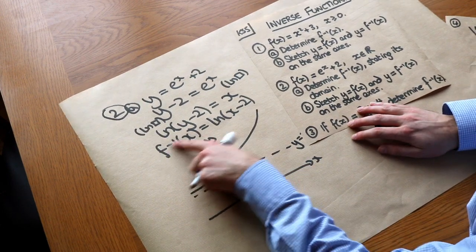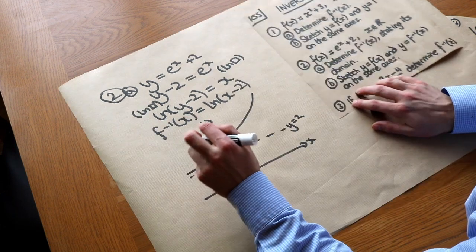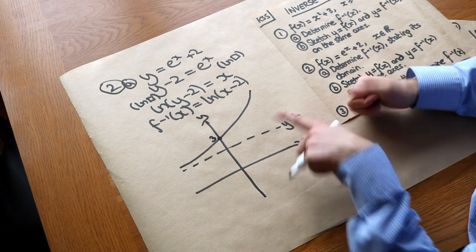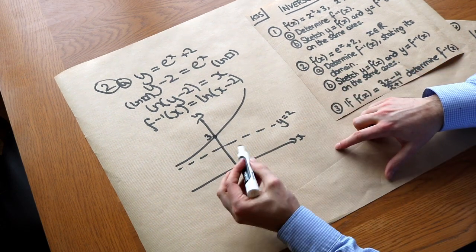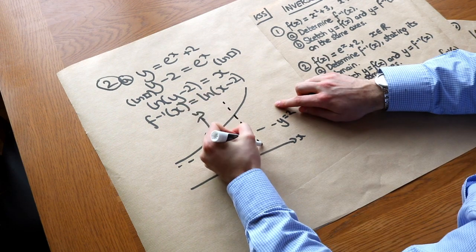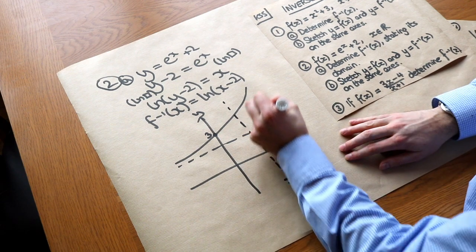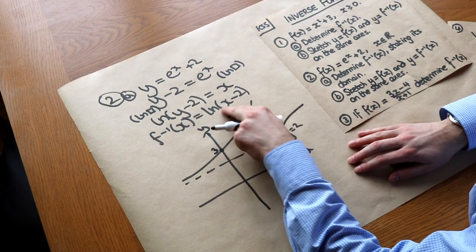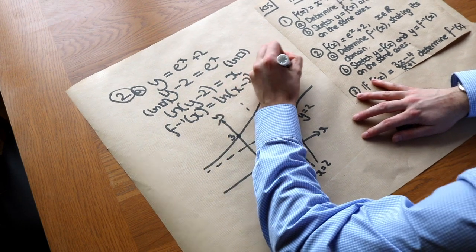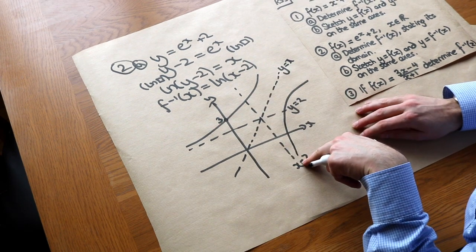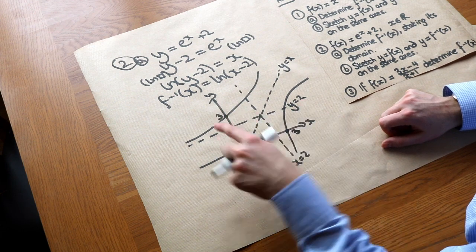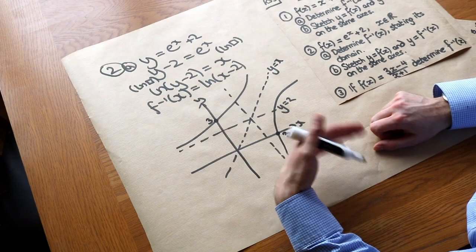Now we sketch y = f⁻¹(x), i.e. y = ln(x − 2). A ln graph has that characteristic shape, and the minus 2 inside the function shifts it right by 2. A standard ln graph has the y-axis as its asymptote, but shifted right 2 the asymptote becomes x = 2. We could also have sketched this by drawing y = x and reflecting the original graph in that line: the y-intercept of 3 becomes an x-intercept of 3, and the asymptote y = 2 becomes the asymptote x = 2.